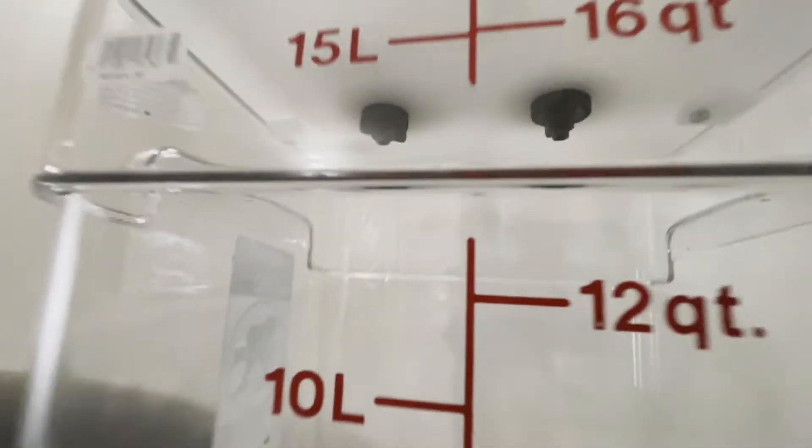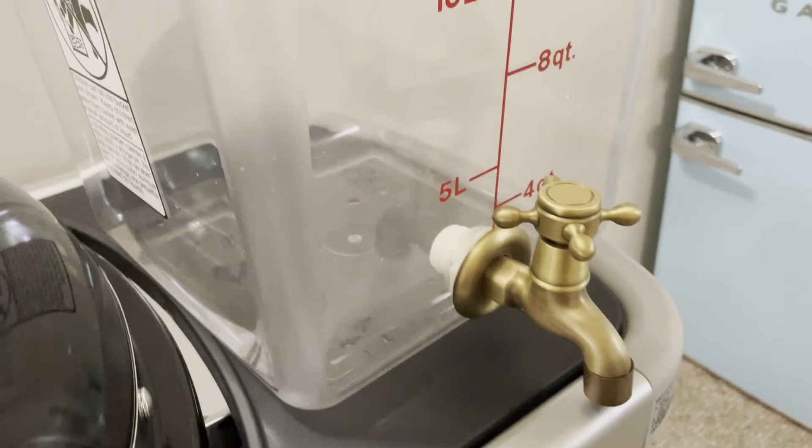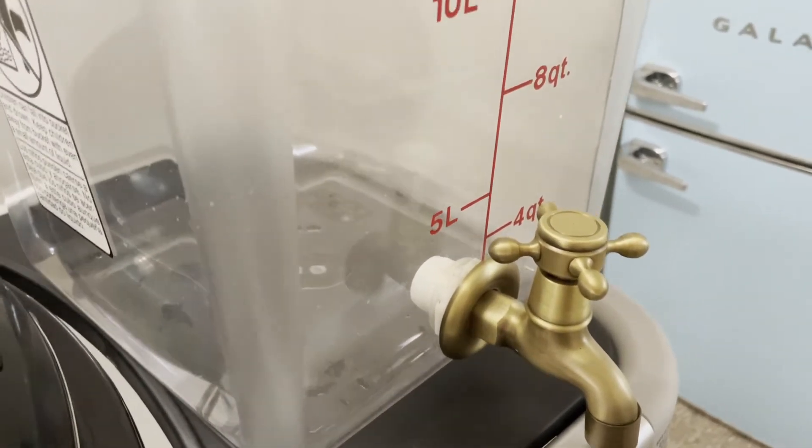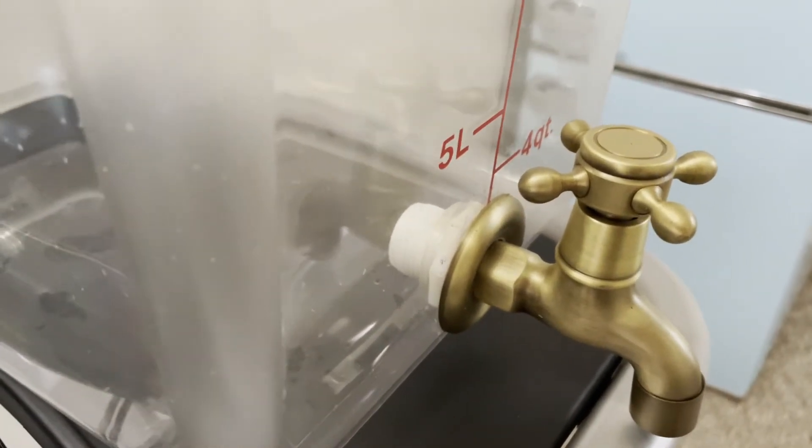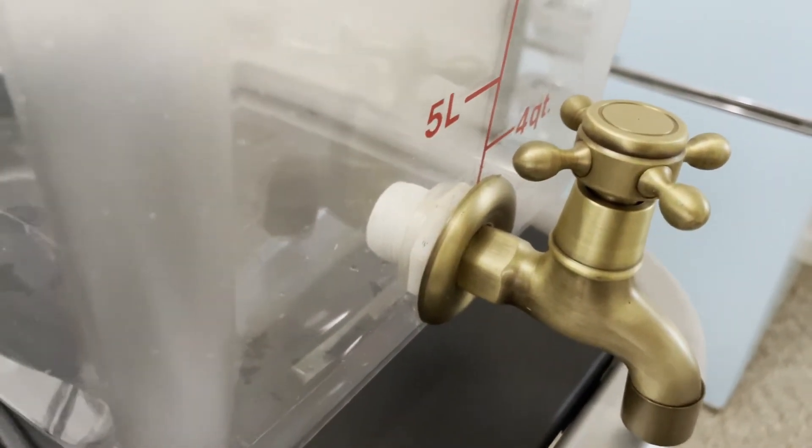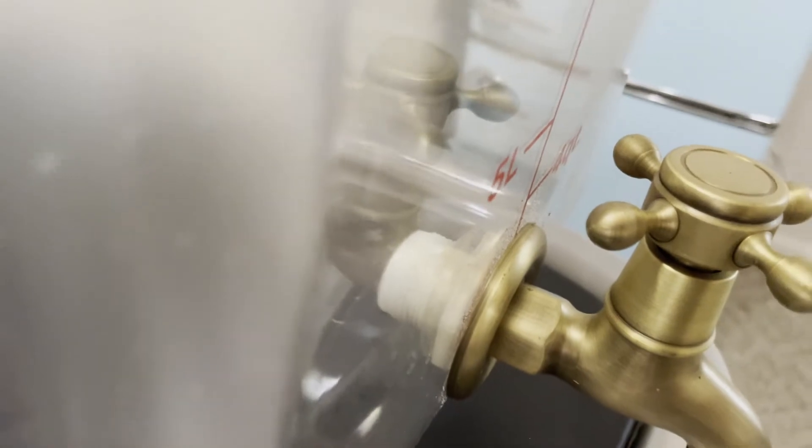As for the faucet, it's a 5/8 inch pipe on the back of that. I took a 5/8 inch arbor bit, drill a hole through the plastic. I found this nut on Amazon, threads onto the back of it.